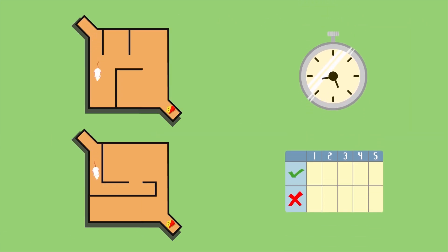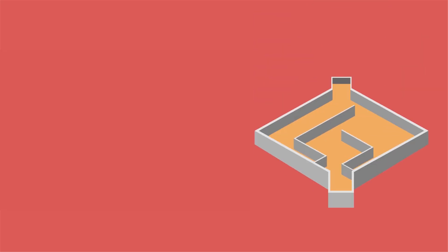Any entry into a portion of the maze that does not lead to the goal box is considered an error. A successful trial occurs when the rodent progresses through the maze quickly with no errors.